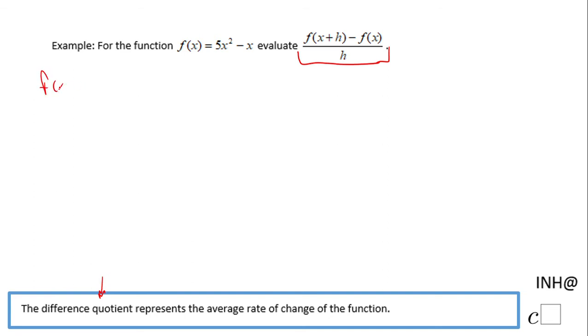So first of all, you're going to take this f of x plus h and evaluate it. That means take the x plus h and plug it where x is. So in this case we have 5 times the quantity x plus h squared minus x plus h. Now I'm going to use a shortcut for this x plus h squared - that is going to be 5 times x squared plus 2xh plus h squared.